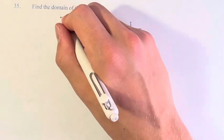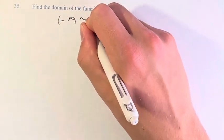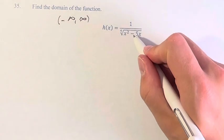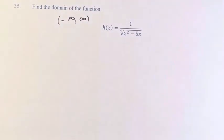So our starting point for the domain of any function is all real numbers, negative infinity to positive infinity. And we look at our function and say, which values are invalid for this particular function?